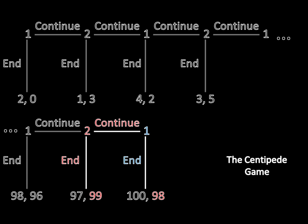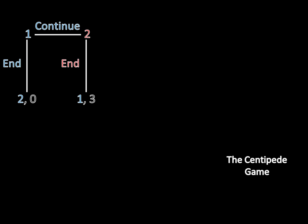We repeat this all the way up to the beginning, where player 2 is going to end at her early choice. Because of that, if player 1 continues, she ends and he gets 1. If he ends, he gets 2. 2 is greater than 1, so he's going to end. The subgame perfect equilibrium is everyone ends at their given information set, which means the outcome of the game is for player 1 to end right at the very beginning — he gets 2 and player 2 gets 0.